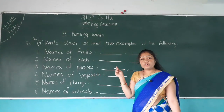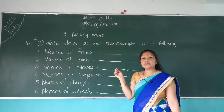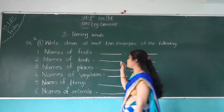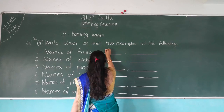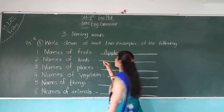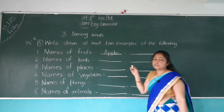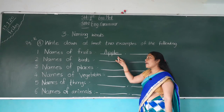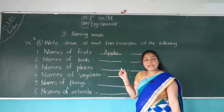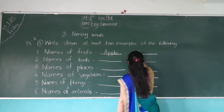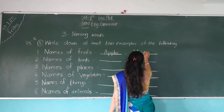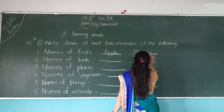Do you eat fruit? Which type of fruit do you eat? Apple. Have you eaten apple? Write down the spelling of apple — A-double-P-L-E, Apple. Apple is a fruit. Then another — have you eaten mango? Yes. Mango is also a fruit.